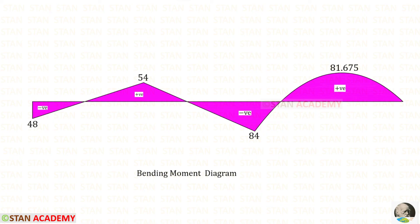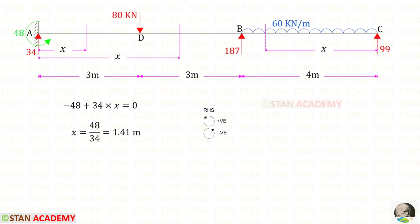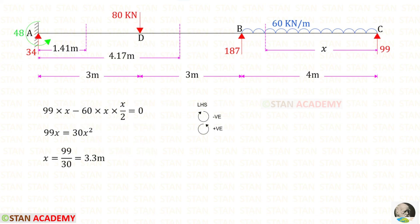This is the complete bending moment diagram. If we flip this diagram upside down, that is the BMD on the tension side. At three points the bending moment becomes zero — these are the points of contra-flexure. Making sections at those three points and using equilibrium: using the right-hand side rule, the first distance is 1.41 m; for the second distance x we get 4.17 m; and using the left-hand side rule for the third distance we get 3.3 meters.